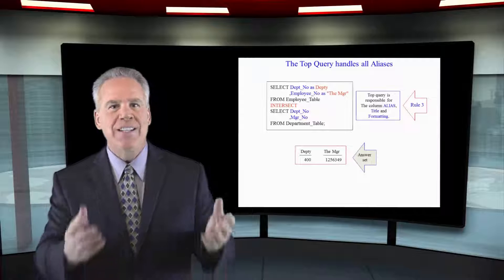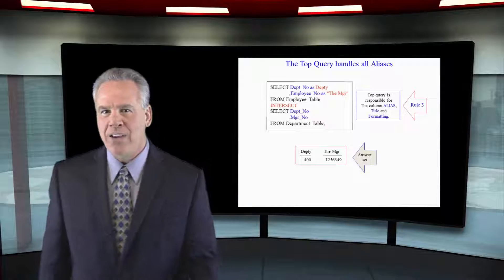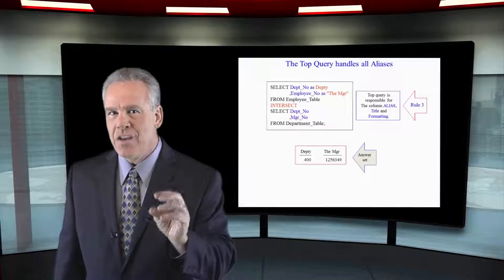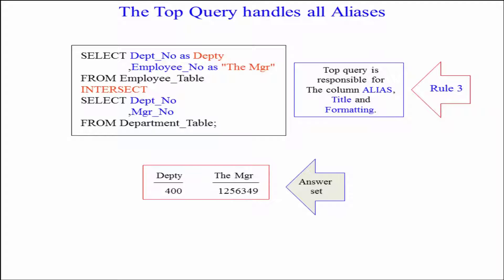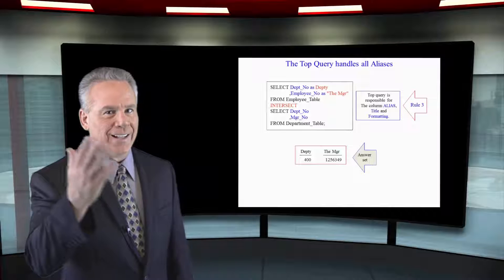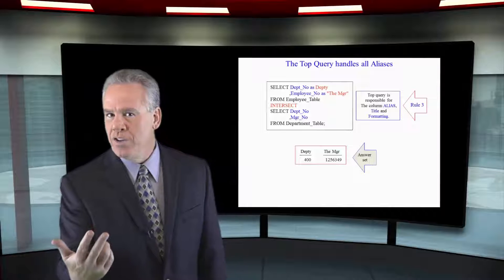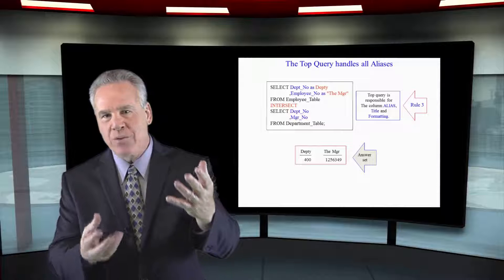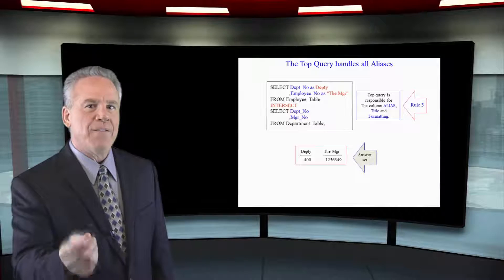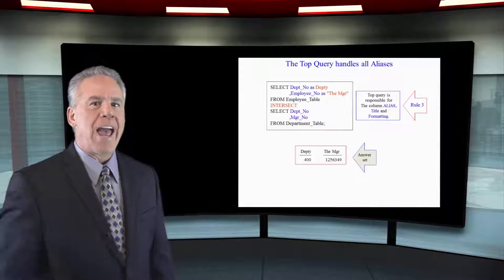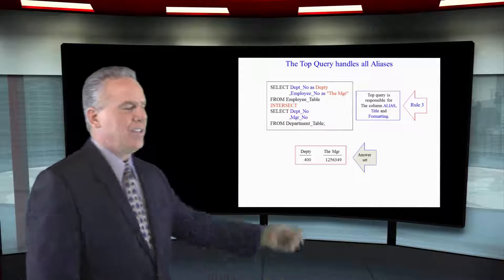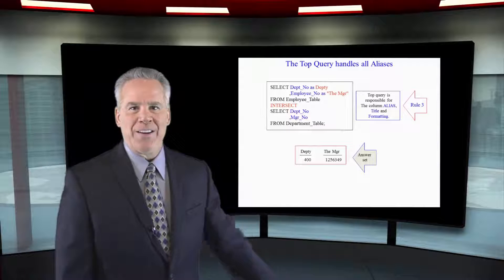Here's your next rule. The top query handles all aliasing. As you can see here, we're going to select the department number as Depno, we're going to alias the employee number as the manager, intersect, select department number and manager number from the department table. We've got two columns in the top and they're aliased up there. We've got two columns in the bottom. They're actually like data even though the names are different. In the department table, we have the manager's employee number. So what we're actually returning here is department 400 and the manager number.